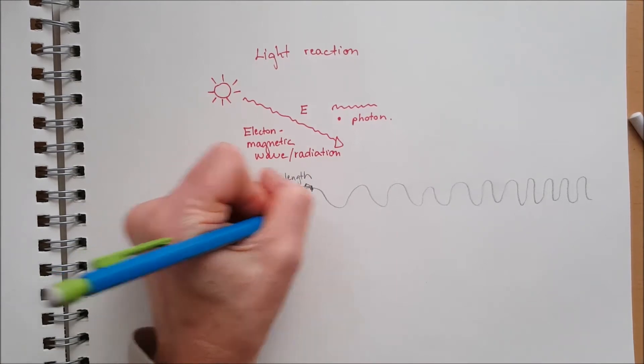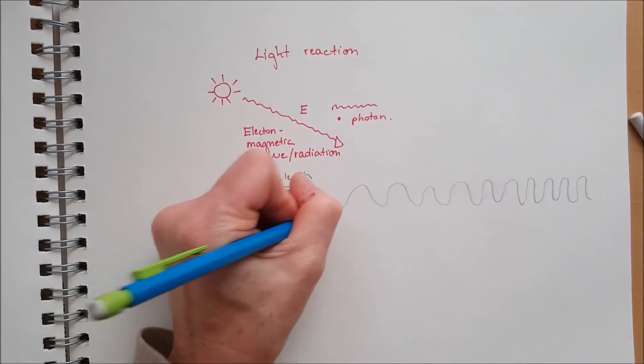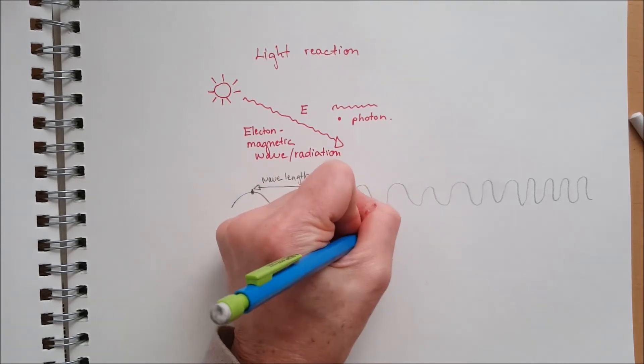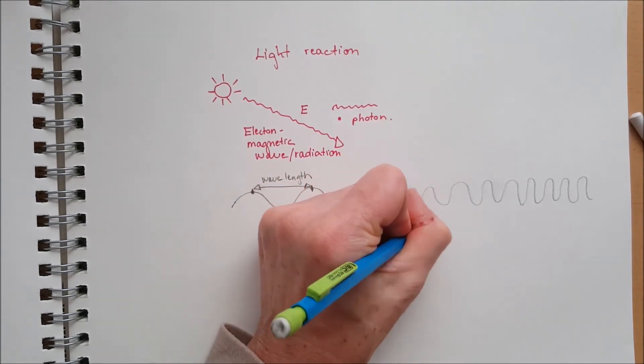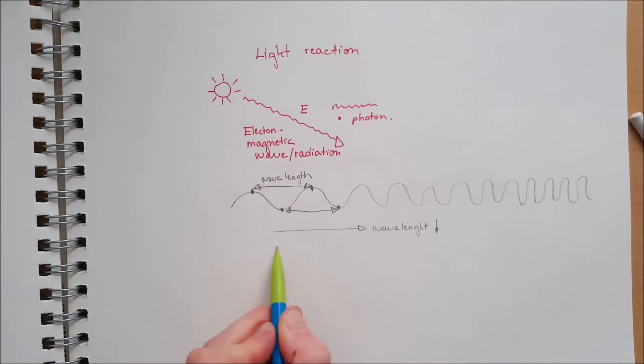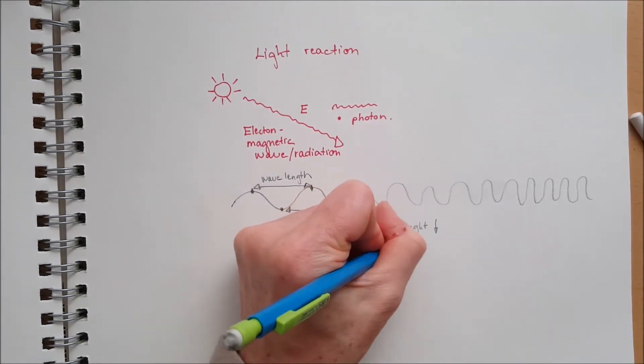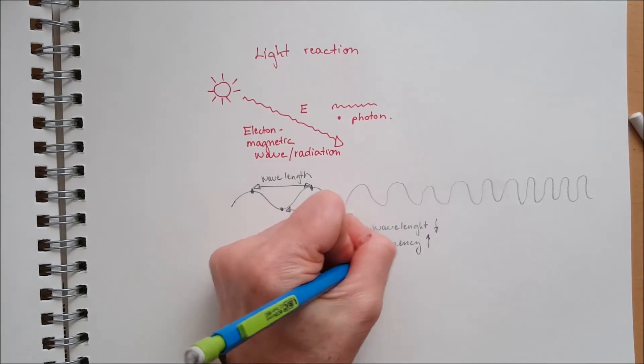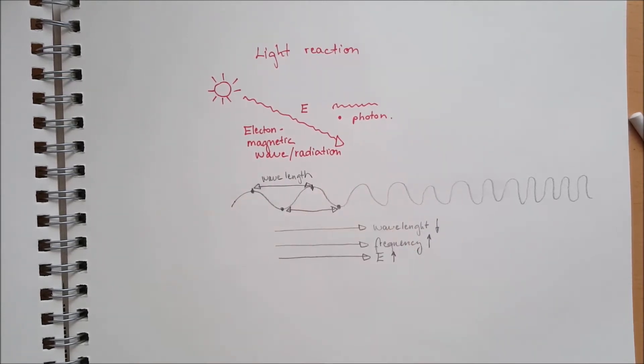So here is the electromagnetic wave and the wavelengths in a wave is the distance between the two crests or between the two troughs. As we go to the right, the wavelengths is decreasing or the frequency of the wave increases because they are inversely related to each other, as well as the energy of the wave or the photon is increasing as we move towards to the right or as the frequency would increase.